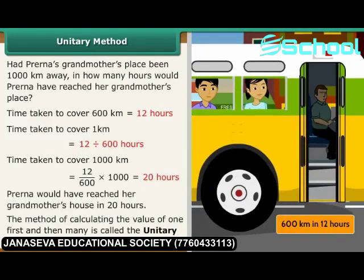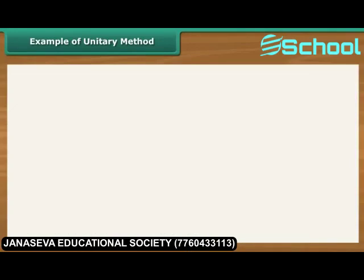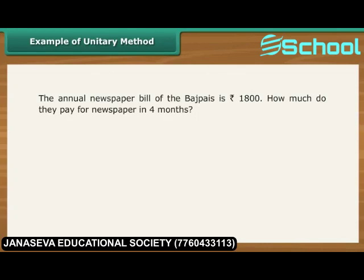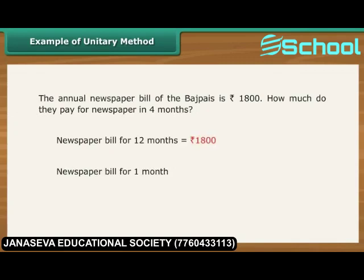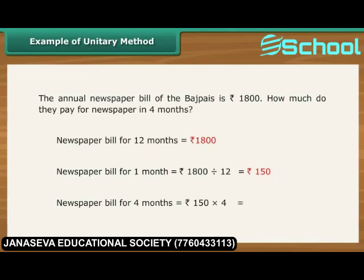The method of calculating the value of 1 first and then many is called the unitary method. Example: The annual newspaper bill of a family is Rs. 1800. How much do they pay for newspaper in 4 months? Newspaper bill for 12 months is Rs. 1800. Bill for 1 month is Rs. 1800 divided by 12, that is Rs. 150. Newspaper bill for 4 months is Rs. 150 into 4, which equals Rs. 600.